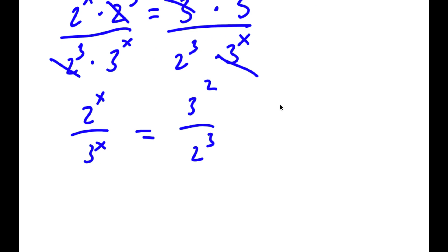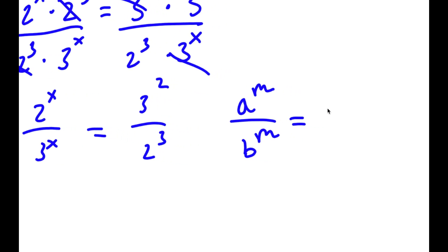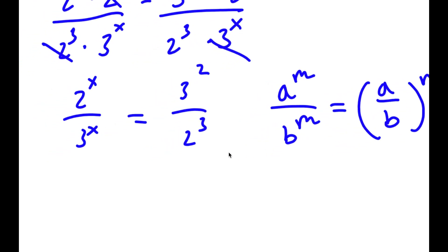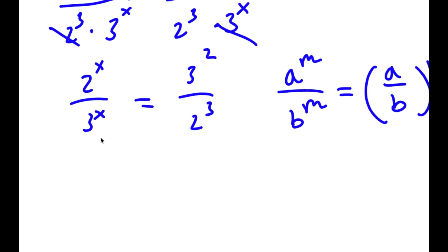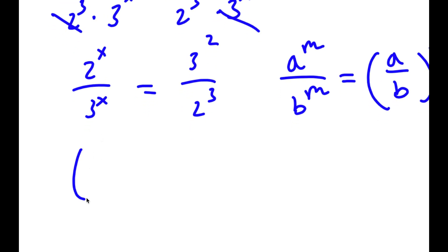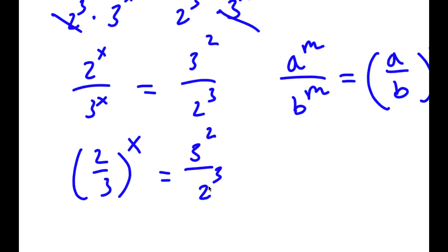Now if I have something in the form a to the power of m over b to the power of m, this is equal to a over b to the power of m. So 2 to the power of x over 3 to the power of x is going to equal 2 over 3 to the power of x. And the right-hand side will still remain 3 squared over 2 to the power of 3.